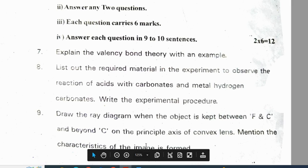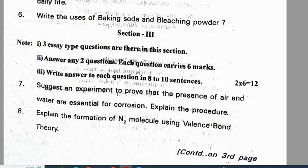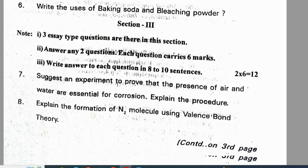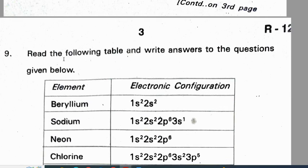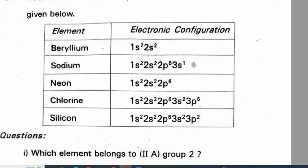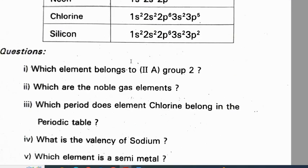Mention the characteristics of the image formed. From Rangareld district pre-final 1: Suggest an experiment to prove that air and water are essential for corrosion and explain the procedure. Explain the formation of a nitrogen molecule using valence bond theory. Read the following table and answer the questions.